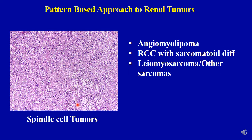The last category is spindle cell tumors. Within this category always keep angiomyolipoma in your differential. If the tumor is obviously malignant, then renal cell carcinoma with sarcomatoid differentiation, leiomyosarcoma, and other sarcomas become important differential diagnoses.